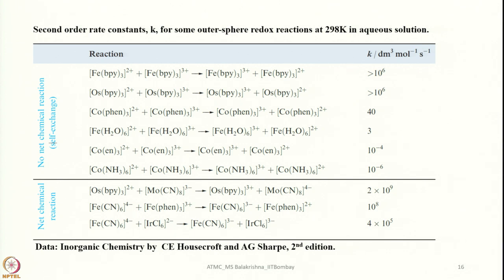For example, if you take bipyridine, phenanthroline, or ethylenediamine — something like that. Such low-spin complex pairs have very similar bond lengths in their ground states. This is very important. When we consider very similar low-spin pairs of complexes for performing outer-sphere redox transfer processes, they will have very similar bond lengths in their ground states.